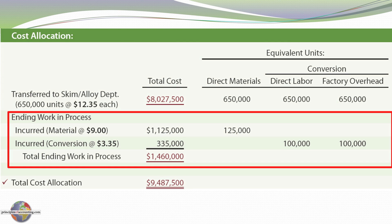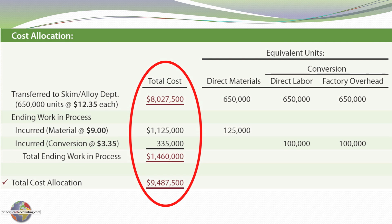For our work in process, we had material cost of $9 per equivalent unit and 125,000 equivalent units of direct materials in process at the end of the month. $3.35 was our conversion cost per equivalent unit and we had 100,000 equivalent units there, giving us $1,460,000 as ending work in process. Our transferred out $8,027,500 plus our ending work in process $1,460,000 equals the total cost allocation of $9,487,500 that we needed to account for — the total cost injected into the work in process account during the month.